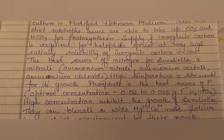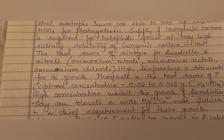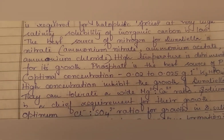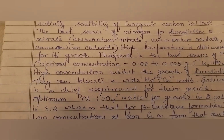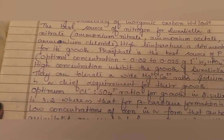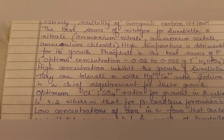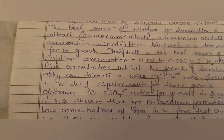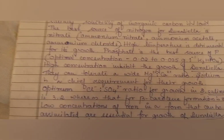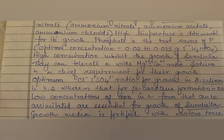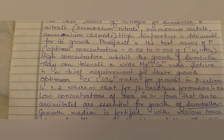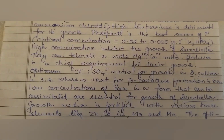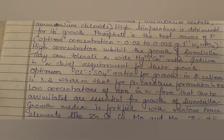High concentration of phosphate inhibits the growth of dunaliella, so concentration must be maintained carefully. Dunaliella can tolerate a wide ratio of magnesium to calcium. Sodium is a chief requirement for their growth. The optimal chloride to sulfate ratio for growth is 3:2, whereas for beta carotene formation it is 8.6. Low concentrations of iron in a bioavailable form are essential for growth. Growth media is fortified with various trace elements like zinc, cobalt, copper, and manganese.